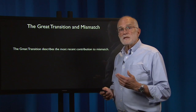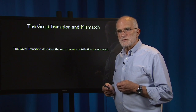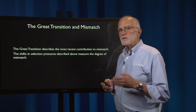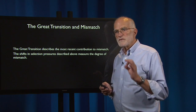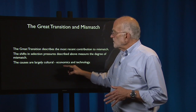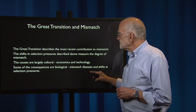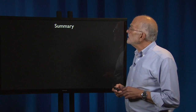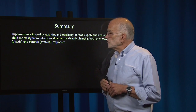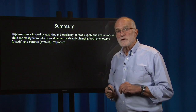We can see this as a striking example of mismatch — really the most recent contribution of environmental change to mismatch disease. The shifts in selection pressures also measure the degree of mismatch. When we find mismatch, it means that natural selection is operating. The causes in this case are largely cultural and mediated by economics and technology. Improvements in the quality, quantity, and reliability of food supply and reduction in child mortality from infectious disease are sharply changing both phenotypic plastic and genetic evolved responses in humans.